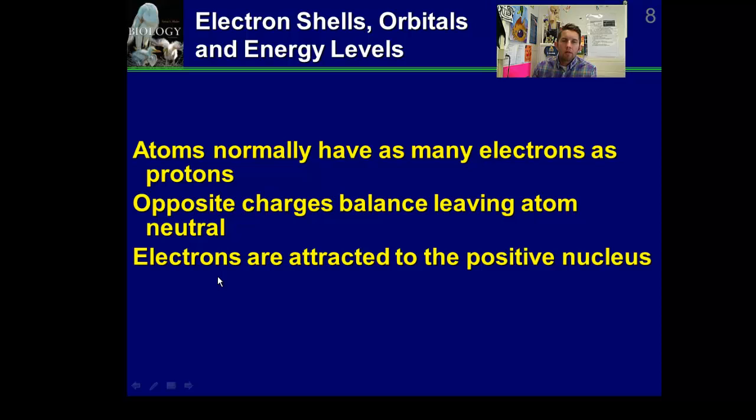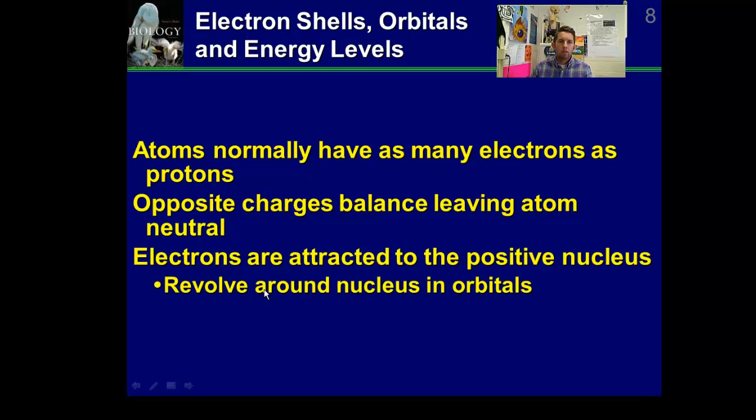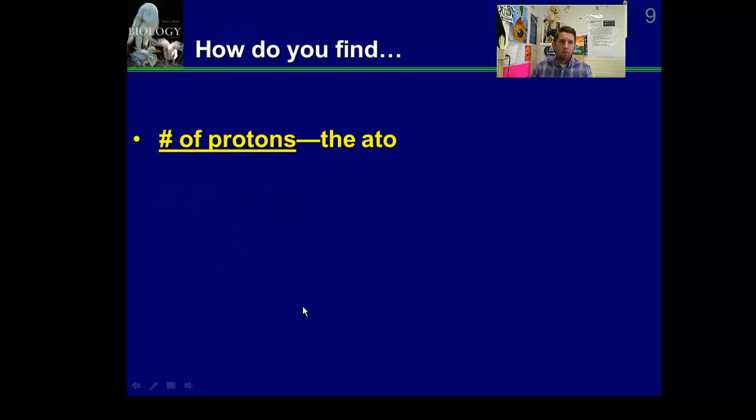Why do the electrons stick around? Well, they're orbiting, right? What keeps them in their orbital? We know that opposite charges attract. Electrons are negative, protons are positive, so that opposite charge, that force is going to keep them there. It's going to keep them revolving in their orbitals or their shells and keep them from going away.